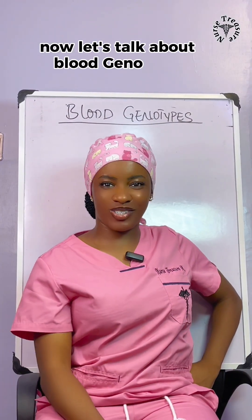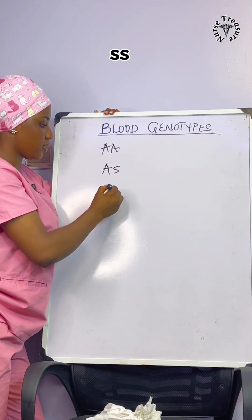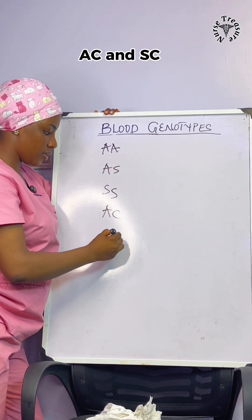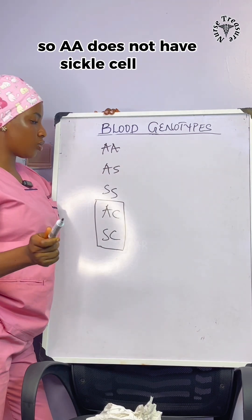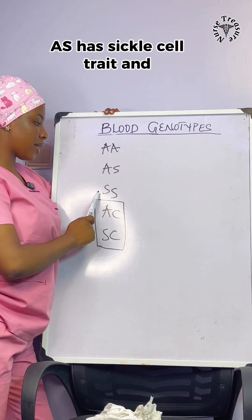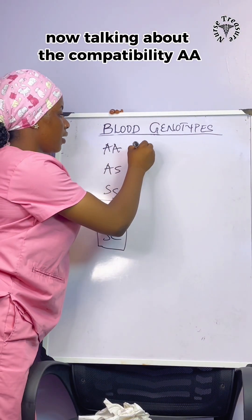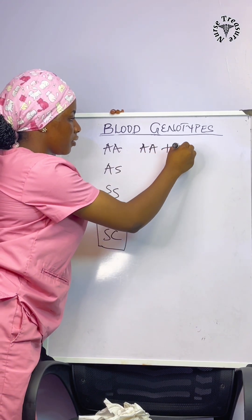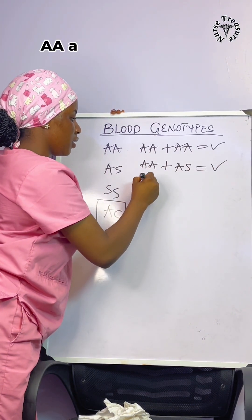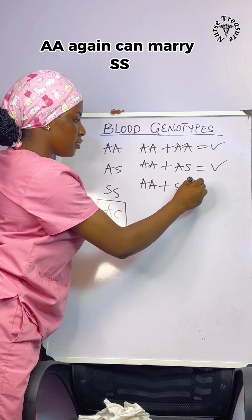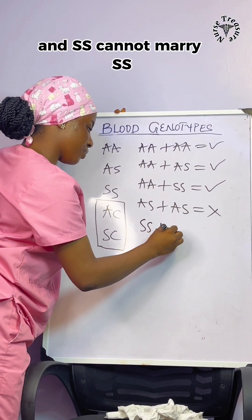Now let's talk about blood genotypes. We have five different types: AA, AS, SS, AC, and SC — though AC and SC are very rare. S denotes sickle cell traits. AA does not have sickle cell traits, AS has sickle cell traits, and SS is sickle cell disease itself. AC and SC are very abnormal. Regarding compatibility: AA can marry AA, AA can marry AS, and AA can marry SS. But AS cannot marry AS, and SS cannot marry SS.